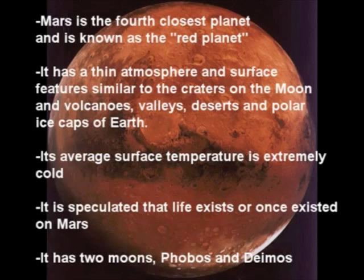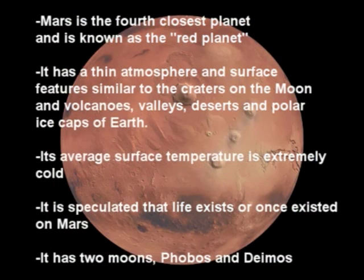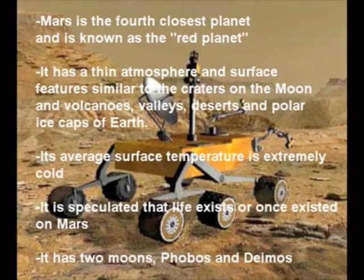Mars is the fourth closest planet and is known as the red planet, due to the iron oxide on its surface which gives it a reddish hue. It has a thin atmosphere and surface features similar to the craters on the moon and volcanoes, valleys, deserts, and polar ice caps of Earth. Its average surface temperature is extremely cold. It is speculated that life exists or once existed on Mars, with probes and satellites sent to study and examine it. Mars has two moons, Phobos and Deimos.